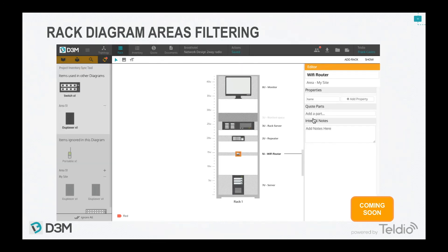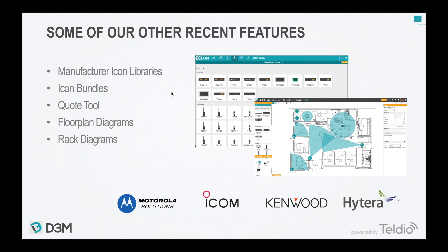We're also working on rack diagram area filtering. In the inventory sync tool, you'll be able to filter items by area — so you can see which repeater belongs to which area, which physical site. This makes it clear which item to place on which rack and ensures deletions on the topology affect the correct item. You'll be able to see all icons sorted by area and confirm which area each belongs to. This is coming very soon.